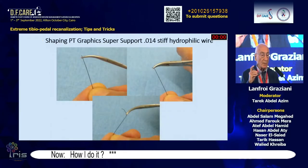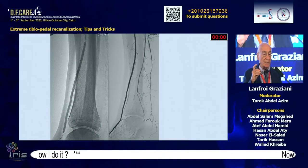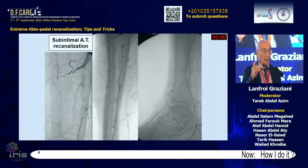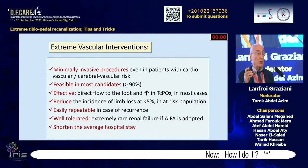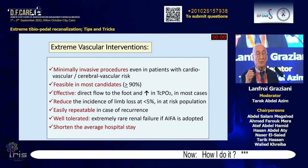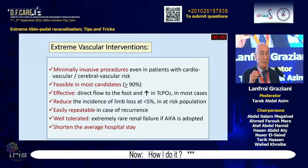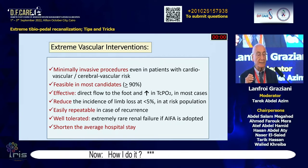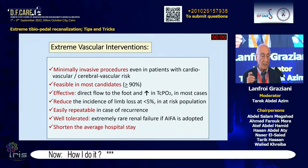In conclusion, extreme vascular interventions are minimally invasive procedures, feasible even in patients with cardiovascular and cerebrovascular risk. They are effective at reducing limb loss to less than 5% in at-risk populations, repeatable in case of recurrence, well-tolerated, with extremely rare renal failure, and crucially shorten the average hospital stay.